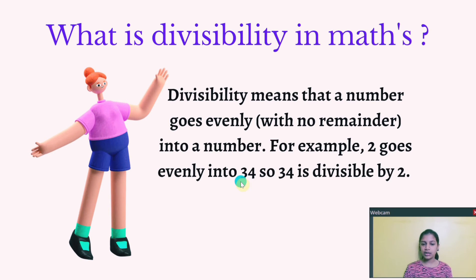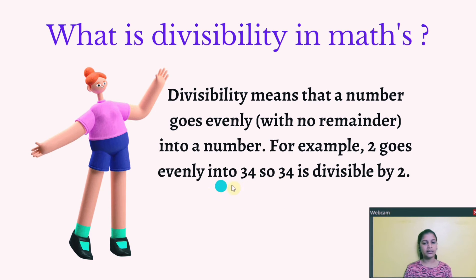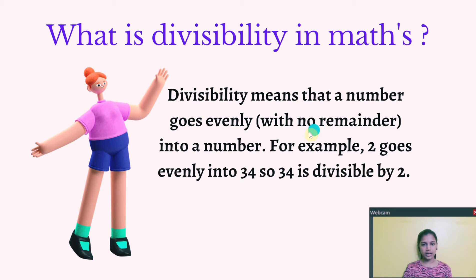But if you take the same number and divide it by 3, 34 is not divisible by 3. Because if you divide 34 by 3, we will get a remainder. We should not get a remainder if the number is to be divisible. So 34 is not divisible by 3.